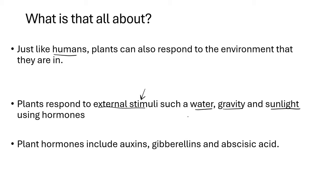So how do plants do this? Plants actually use hormones to respond to their environment. These hormones include auxins, gibberellins, as well as abscisic acid. But in this video, we're particularly going to look at the auxins.